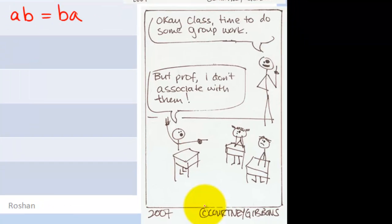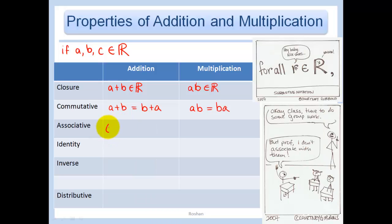Associative property. Let's start off with the comic. Class, time to do some group work. But, professor, I don't associate with them. Associative property says that A plus B, you get that answer, and then add C to it, gives you the same answer as taking A, and then adding to it the sum of B plus C. You see what she just said there? She said, do the quantity A plus B first, and then add C. And that's the same thing as A plus the answer to the quantity B plus C. And then we have the associative for multiplication, which is the same thing, only with a multiplication sign instead of an addition sign.